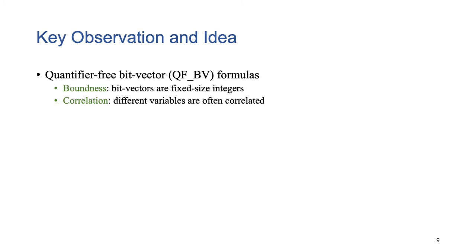Our basic observation is twofold. First, every bit-vector formula is bounded. And second, variables from programs are often correlated. Based on observation, our key idea is to leverage these properties to reduce redundant computations in symbolic abstraction. In this talk, I will mainly focus on the polyhedral abstraction part.